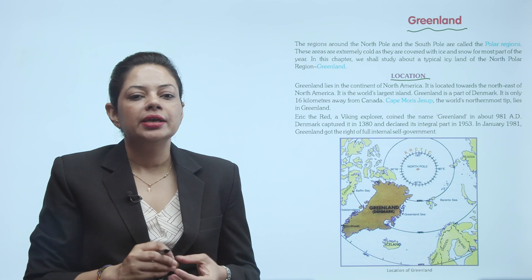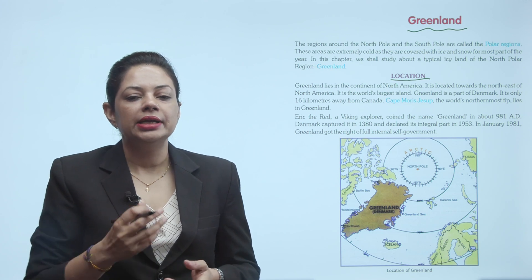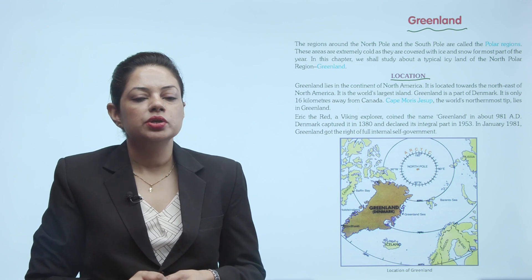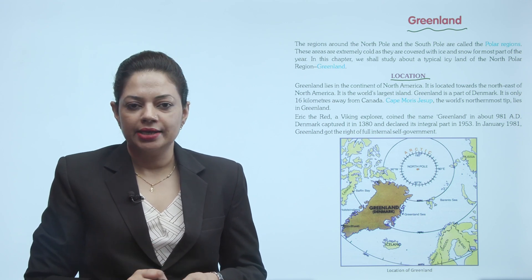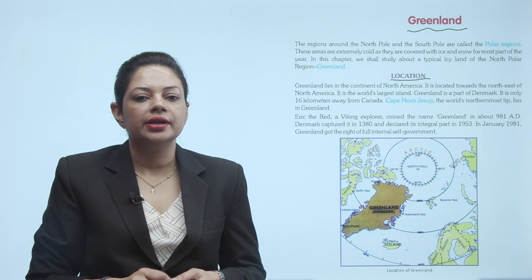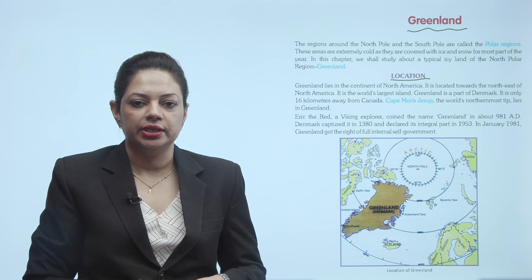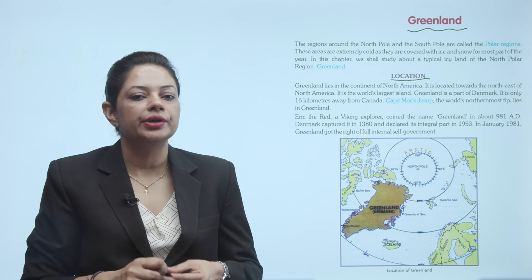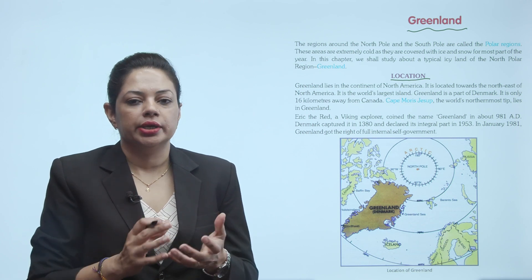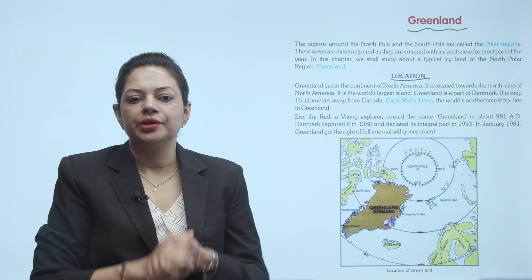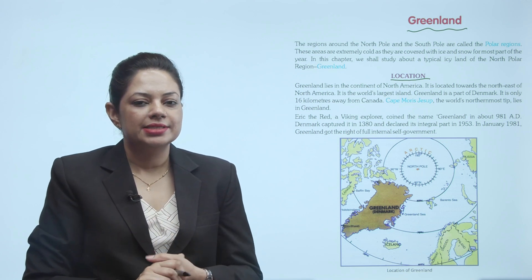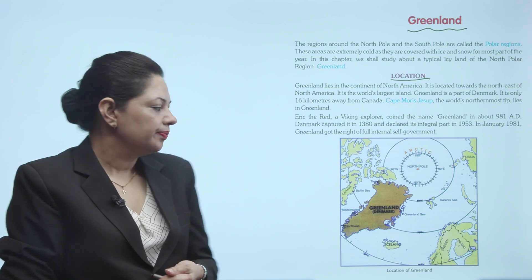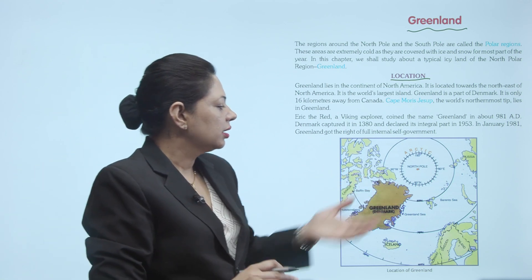Eric the Red, a Viking explorer, coined the name Greenland in about 981 AD. Denmark captured it in 1380 and declared it its integral part in 1953. In January 1981, Greenland got the right to full internal self-government. 1981 mein Greenland ko full internal self-government ka charge mila — ek alag se country mili. Toh yeh aapki location hai Greenland ki.